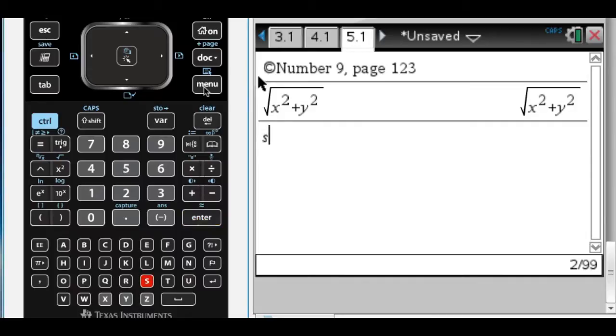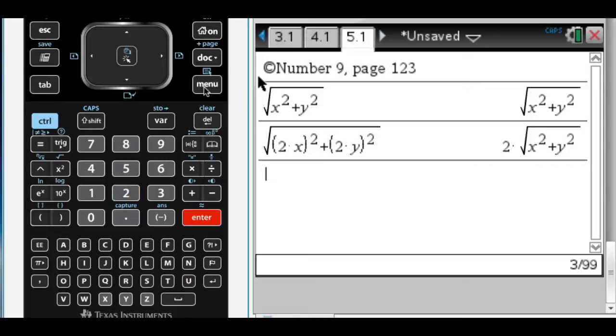And then your new point is 2x. So 2x squared plus 2y squared is the distance from that point to the origin. So that's obviously just going to be 2 times D. So that's option D.